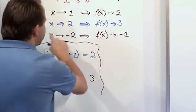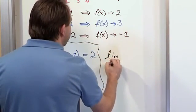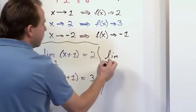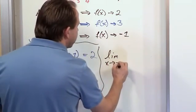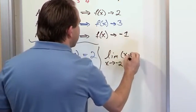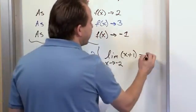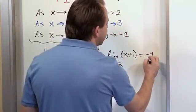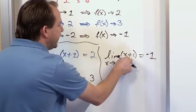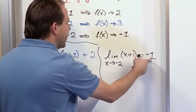Finally, the limit as x approaches negative 2 of x + 1. We said that limit approaches negative 1. Practically speaking, we plug in negative 2: negative 2 + 1 = negative 1.